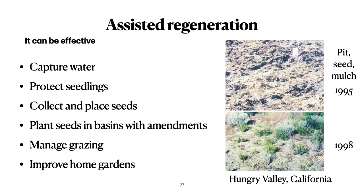Assisted regeneration can be effective. Key steps are to capture the water, protect seedlings, collect and place seeds in basins with amendments, manage grazing better, improve home gardens, and encourage long-term projects that are otherwise difficult to consider. Here we have an example of what can be done with simple techniques — the area above was pitted, seeded, and mulched in 1995. In three years, you can see there is a shrub in almost every basin that was made, and they have held up very well over time.